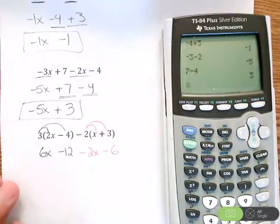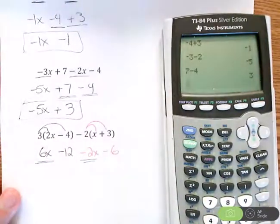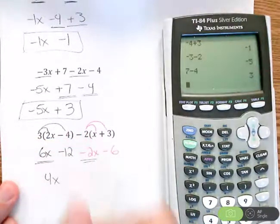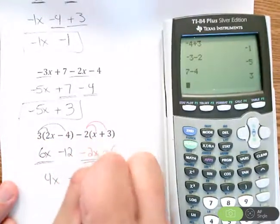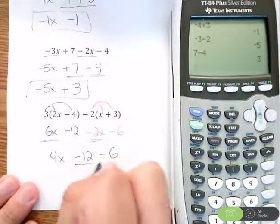Now if you look, after we distribute, this problem just turned into like the previous two I kind of did. So slow and steady, get you right through it. I see a 6x, I see a minus 2x. 6 minus 2 is 4x.